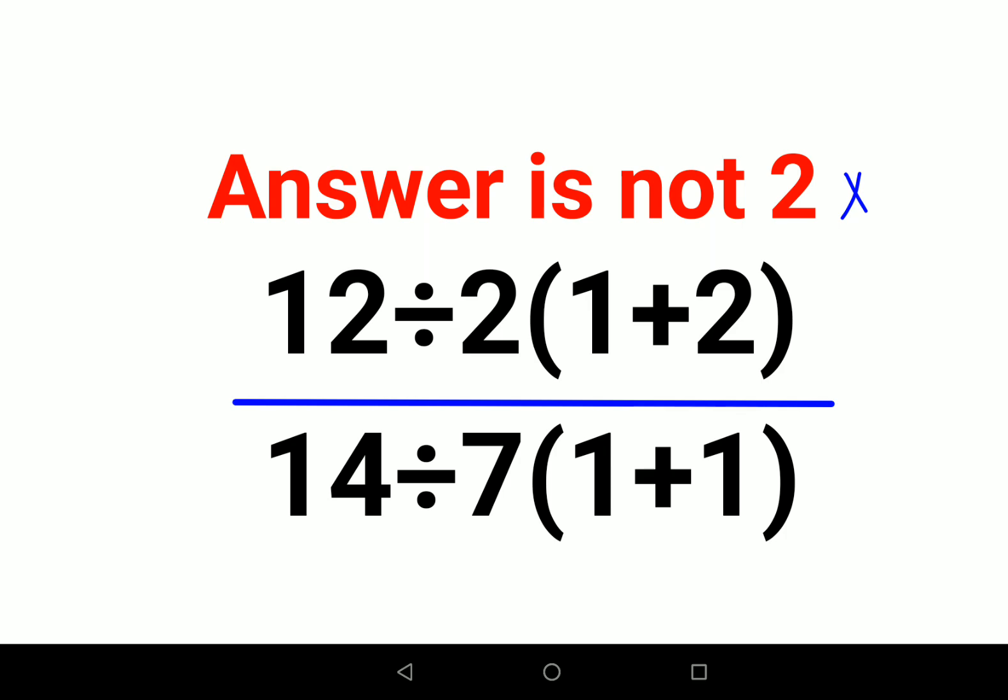I will tell you why people thought that the answer for this one was 2. They didn't divide 12 by 2. They multiplied 2 with this bracket. So this bracket is 3. So 2 into 3, that gets you 6. So they divided 12 by 6 in the numerator, which gets you 2.